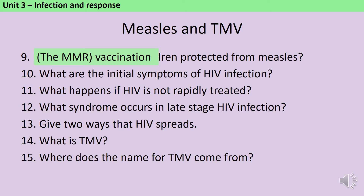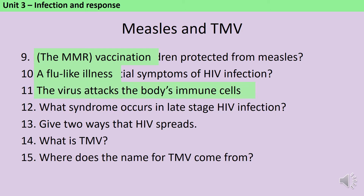The initial symptoms of HIV infection are a flu-like illness, but if this isn't treated quickly enough then the HIV will begin to attack the body's immune system, and this can lead to an autoimmune disease called AIDS. HIV can spread both through sexual contact and also through the mixing of bodily fluids, for instance blood if you're sharing needles.